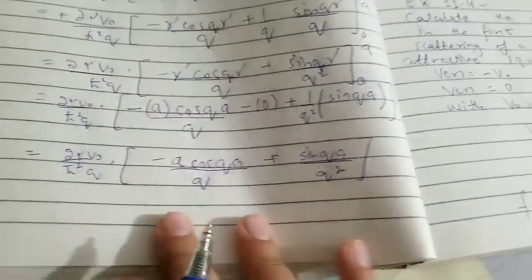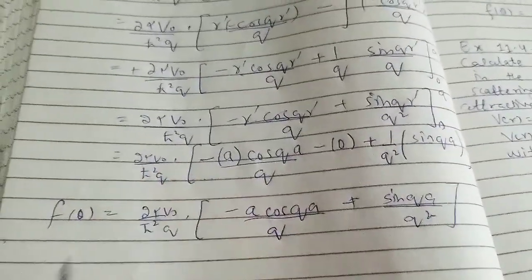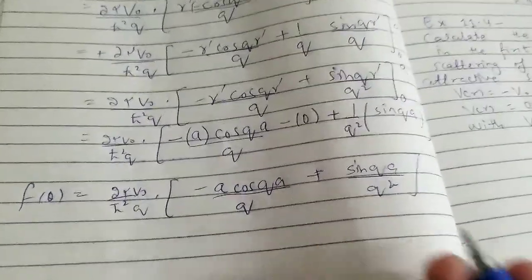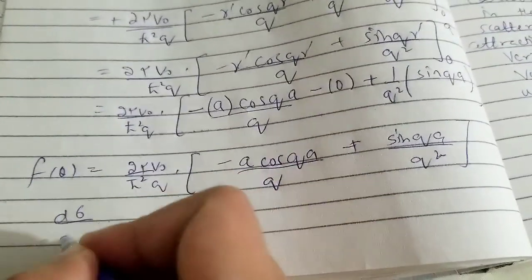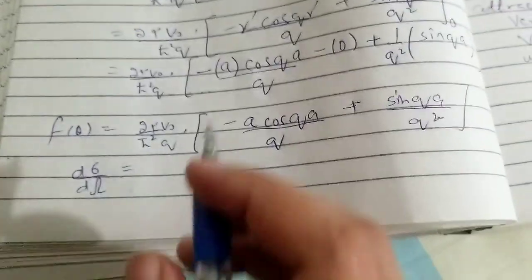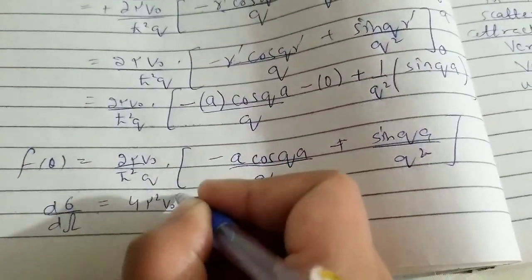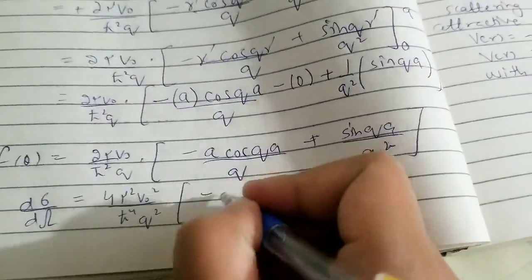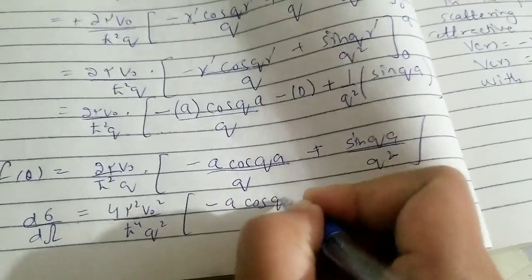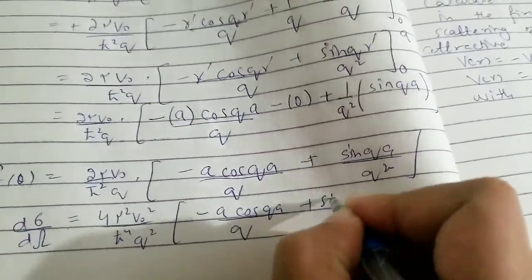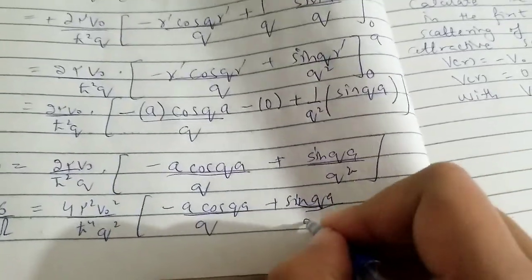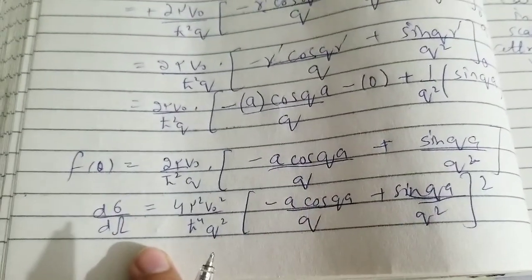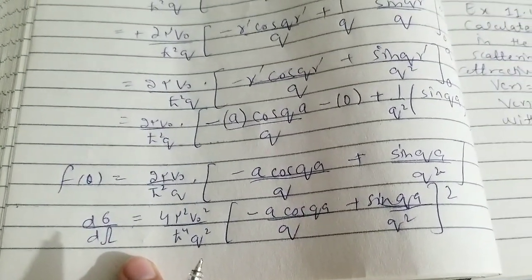This is the value of f of theta that we obtained. Now we take the square of it to get the differential cross-section: d-sigma over d-omega equals the modulus squared of f(theta), which gives 4 mu squared V-naught squared divided by h-bar to the fourth times q squared, multiplied by the square of the bracket quantity. This is the final answer for the differential cross-section in the case of an attractive square well potential.